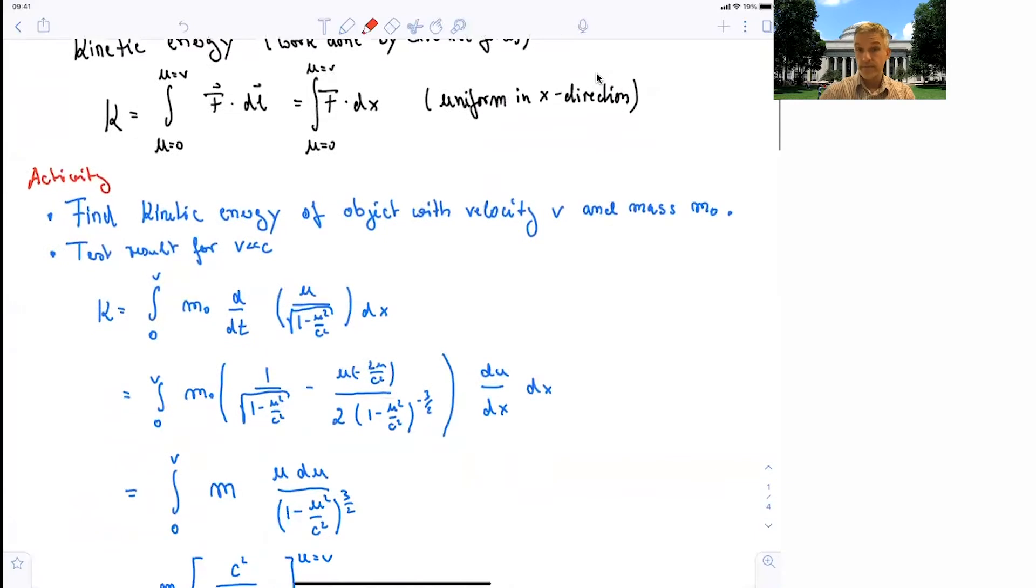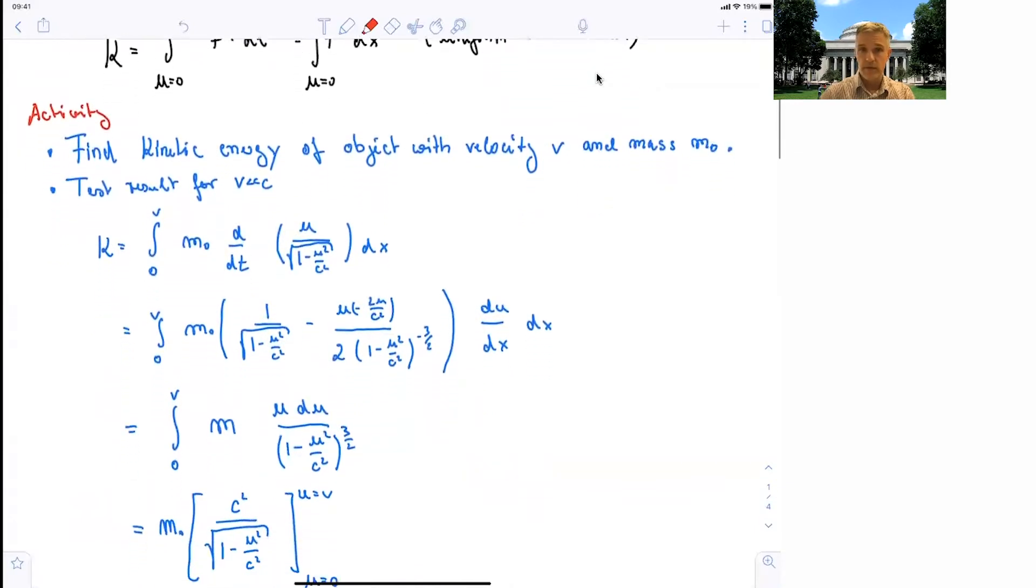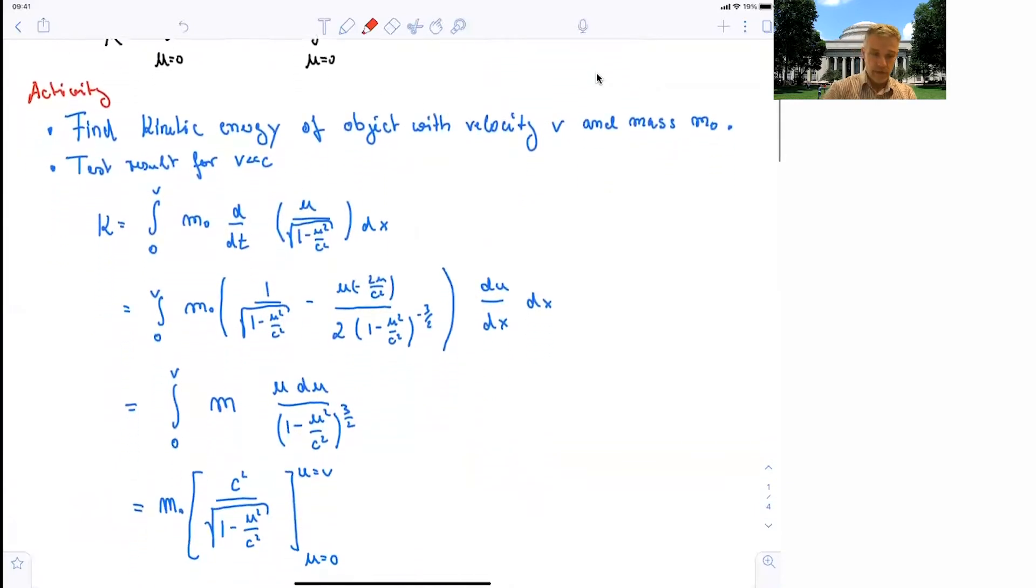So we just have to integrate. So we have to integrate from 0 to v, m0, that's our constant, you can take that out, d/dt of this u times gamma dx. So you find those two components here.